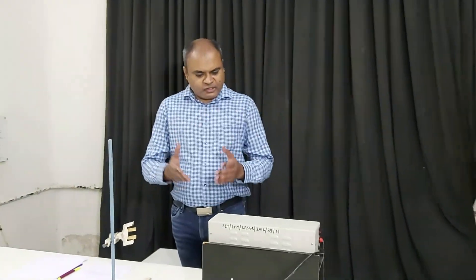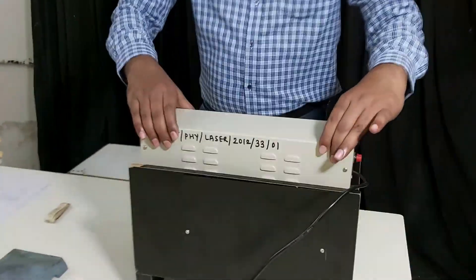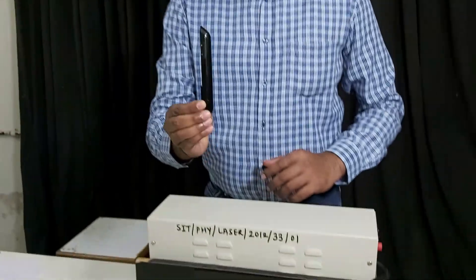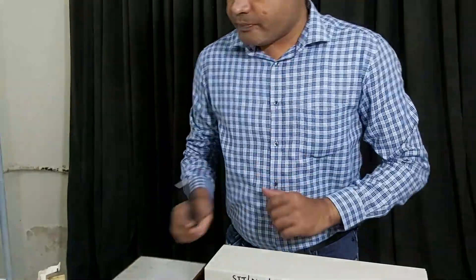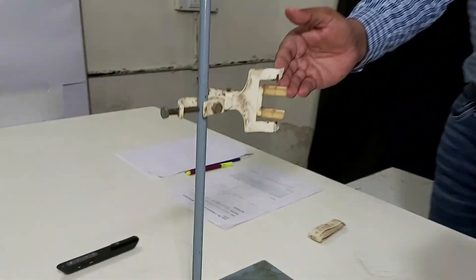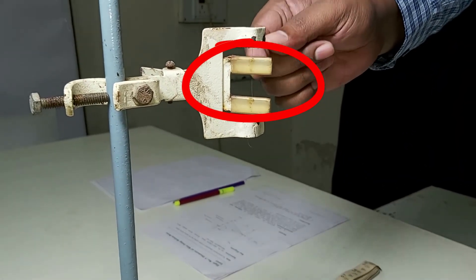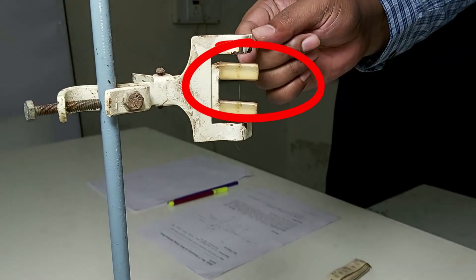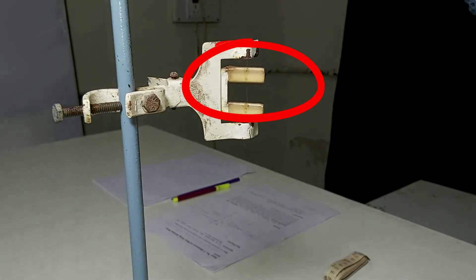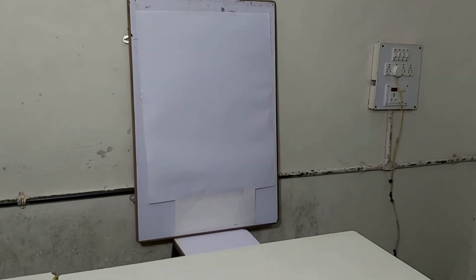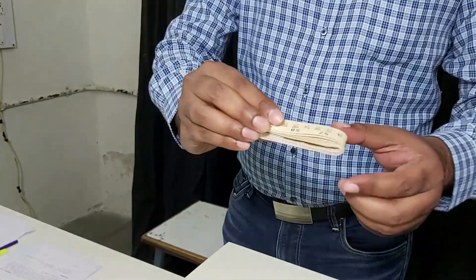First let us look at the apparatus. This is the helium-neon laser, which is bulky compared to this semiconducting diode laser, which is very compact. This is the wire whose diameter is to be found out — a very thin wire attached to this stand. We will find its diameter using laser and diffraction phenomena. Then we have the screen on which we will see the diffraction pattern, and finally we will use this measuring tape.